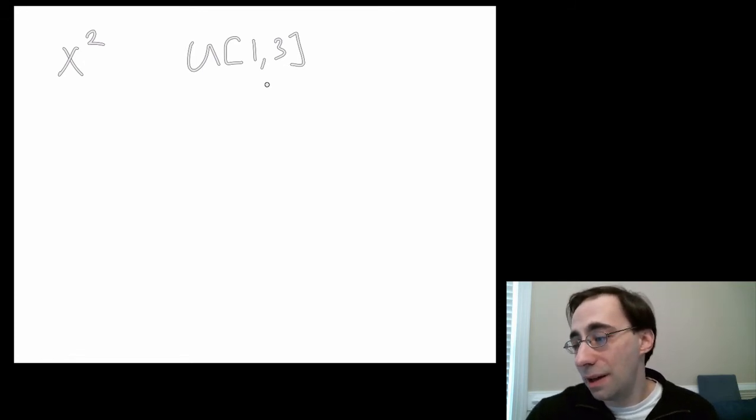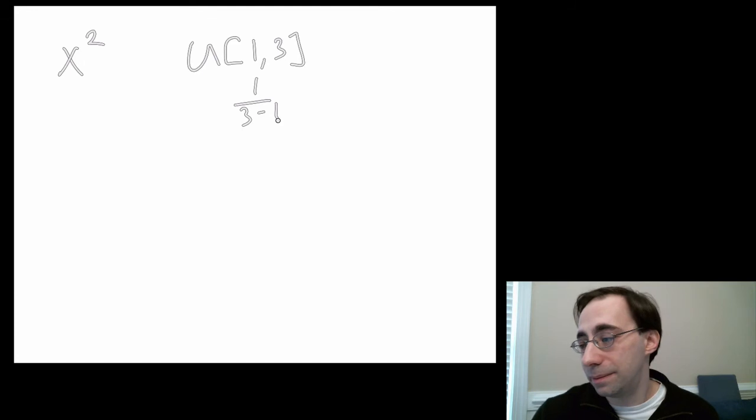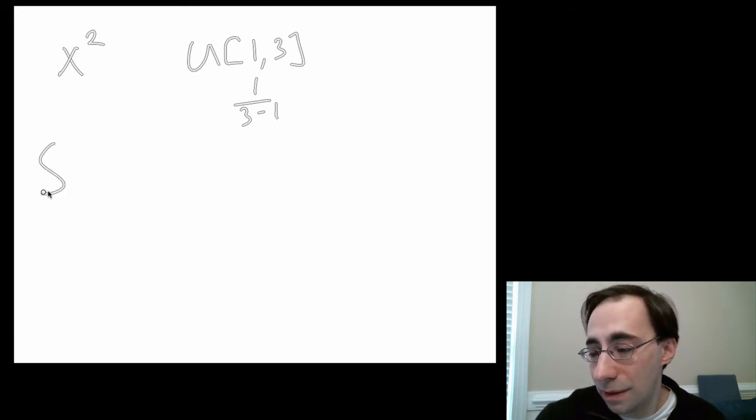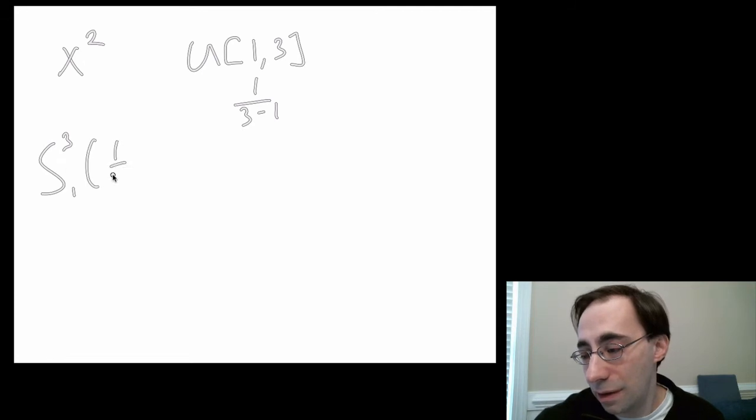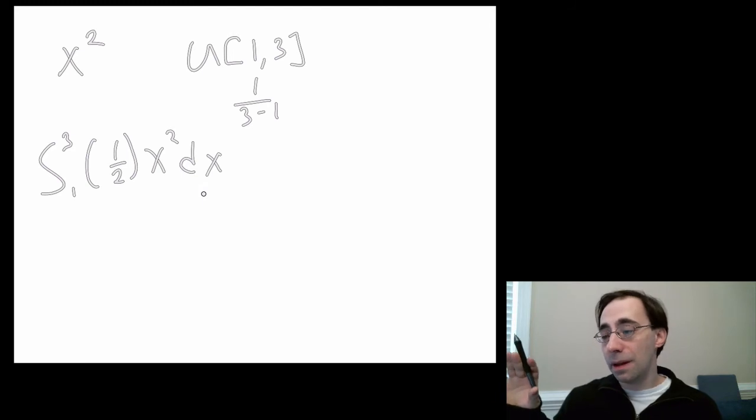So the integral of this is going to be 1/2 times the integral from 1 to 3 of x² dx. And there's a times 1 in there for the uniform distribution's pdf, but 1 times anything is that anything, so we can ignore the 1. We can compute this integral. We already said that the integral of x² is 1/3 x³.